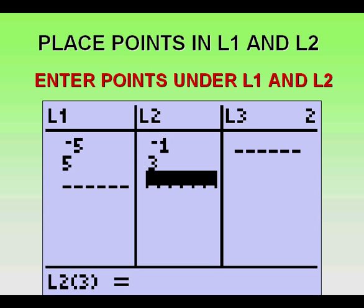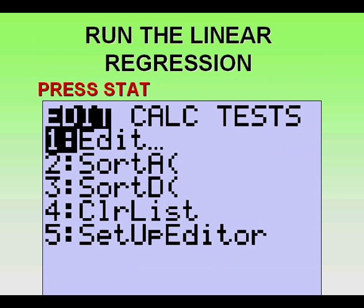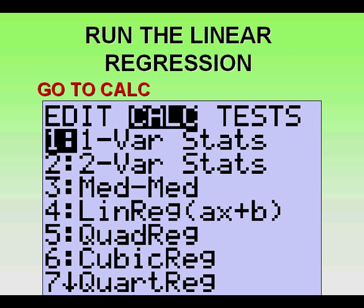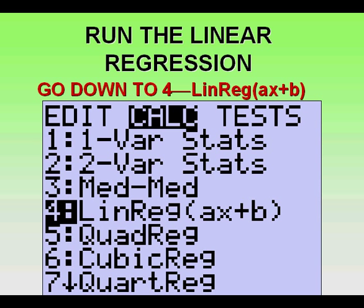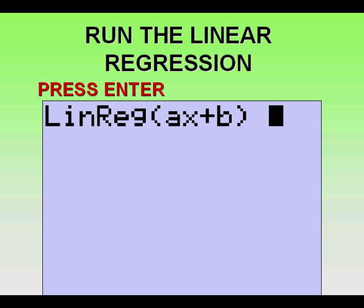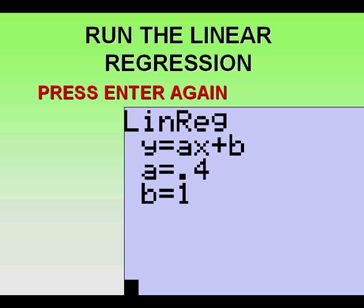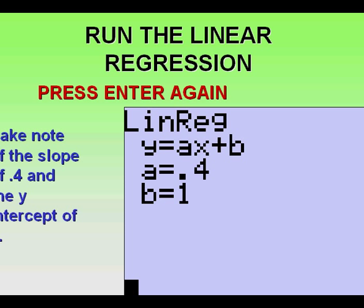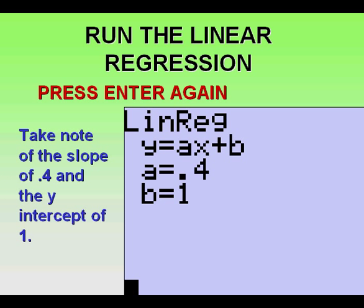From here we press STAT, arrow once to the right to the CALC menu, then down to four for linear regression, and press it twice. We see that we have the equation y = 0.4x + 1. The y-intercept is one and the slope is 0.4.